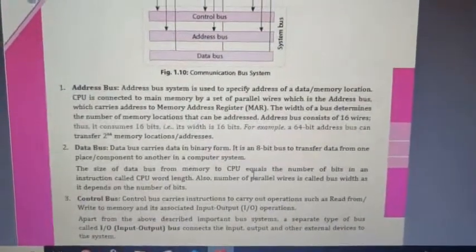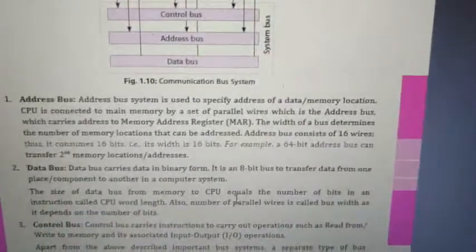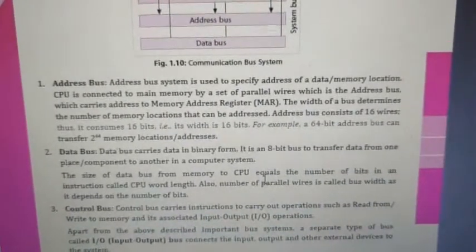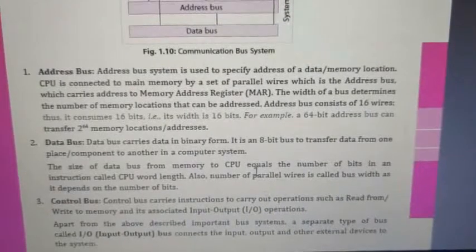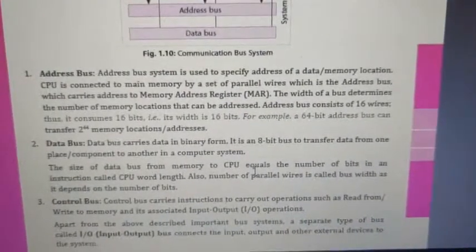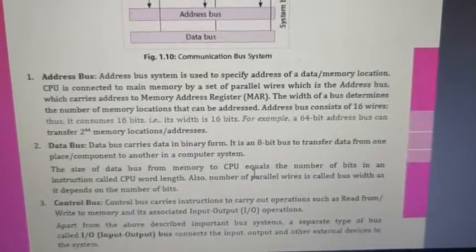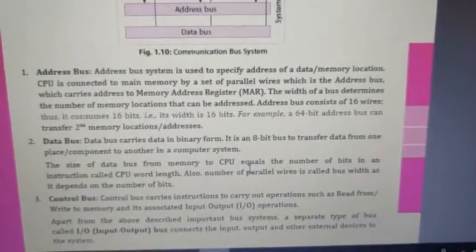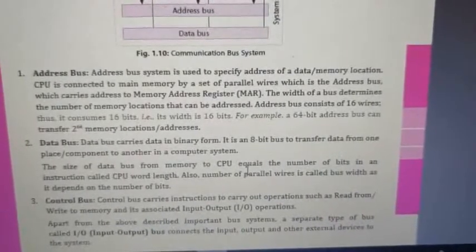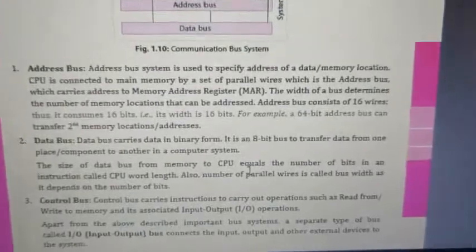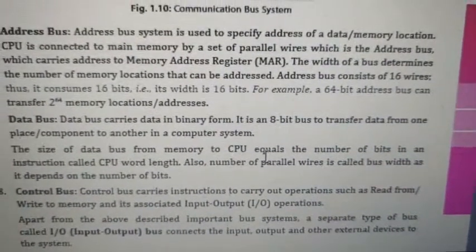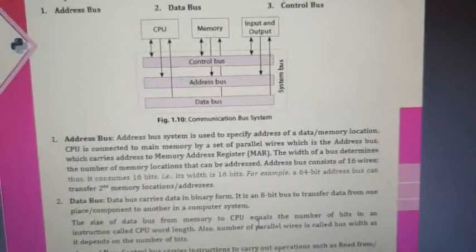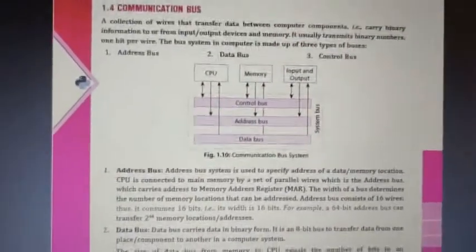The third is the control bus, which carries all instructions — such as from which place, how much memory, and where data has to be stored. The control bus carries instructions to carry out operations such as read from or write to memory and associated input/output operations. Apart from the three main buses, there is also a separate type called the input/output bus, which connects input/output and other external devices to the system. This is an important point that may be asked in exams.